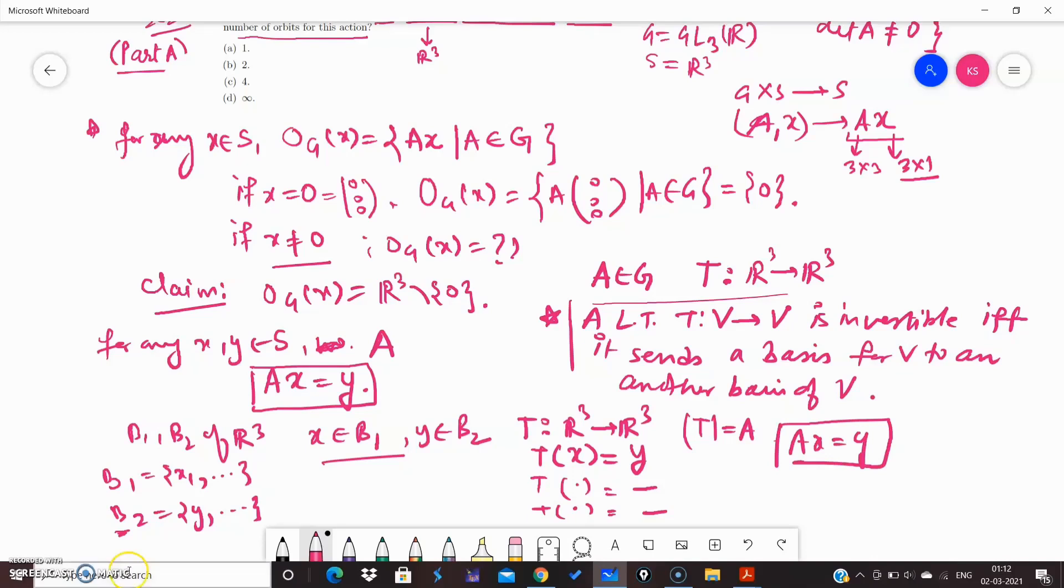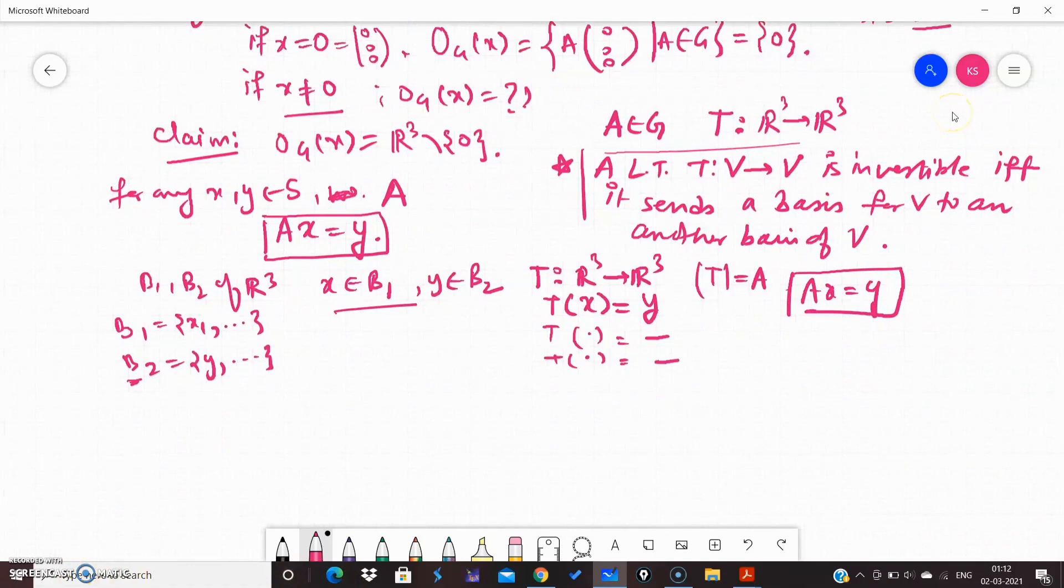We can say that for any non-zero vector, the orbit of this X will be the whole R³ except 0.